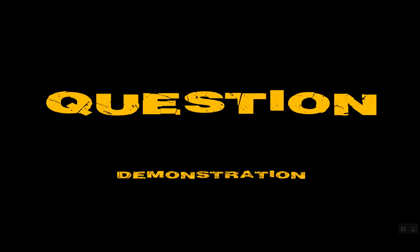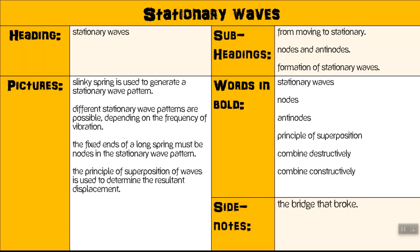Now we're going to go to questioning. I'm going to demonstrate this to you. I take my section on the first two pages and I'm going to turn these into questions. We'll notice that some things repeat — nodes and antinodes, stationary waves — so we don't have to make double questions, but we can use them to ask different types of questions. So the first thing, if we look at the heading: what is a stationary wave?